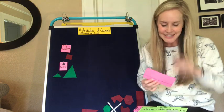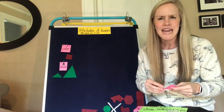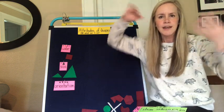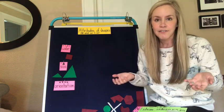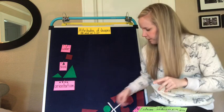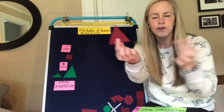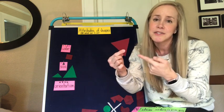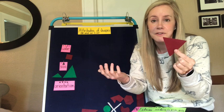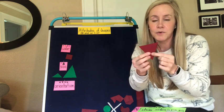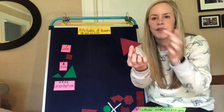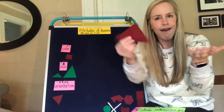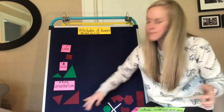Another attribute you can see is orientation — can you say that with me? Orientation is the direction of a shape, so it could go any way. This triangle right here could face like this, it could face like this. A lot of first graders will tell me this is an upside-down triangle — it's not upside down, it's still the same triangle, it's just oriented differently. Shapes can be oriented in any direction.